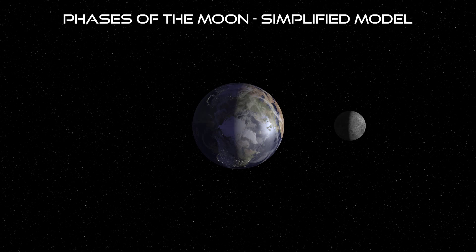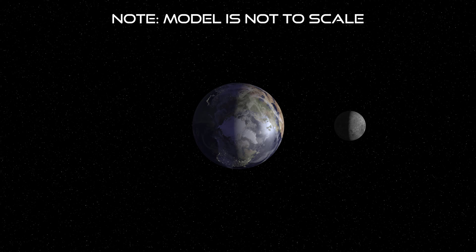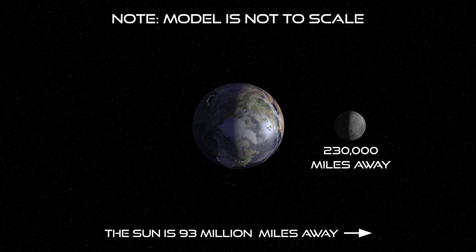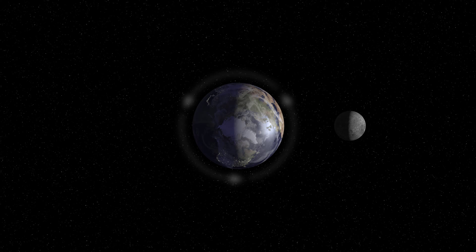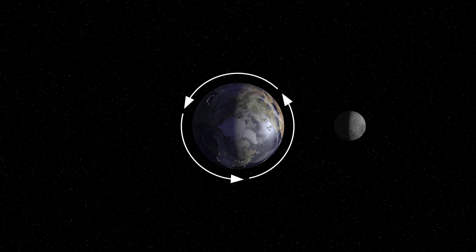Let's look at a simplified model, keeping the Earth from moving around the Sun and the Sun from moving within the galaxy. Only the Moon will move in this system, and note it is not to scale. The Moon is some 230,000 miles away and the Sun 93 million miles distant. It is not easy to show these to scale for this demonstration. In our model, we will have our Earth rotate, as well as show where it is day and night, both on Earth and on the Moon.